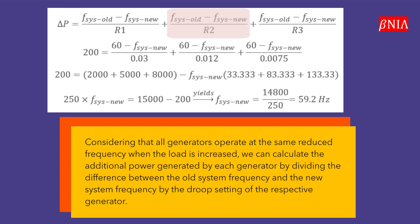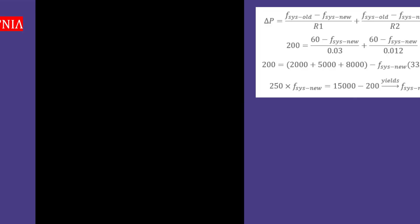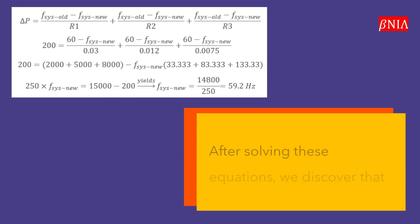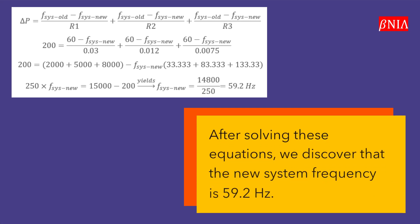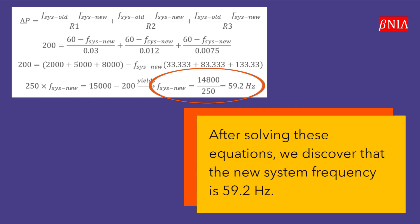We can calculate the additional power generated by each generator by dividing the difference between the old system frequency and the new system frequency by the droop setting of the respective generator. After solving these equations, we discover that the new system frequency is 59.2 Hertz.